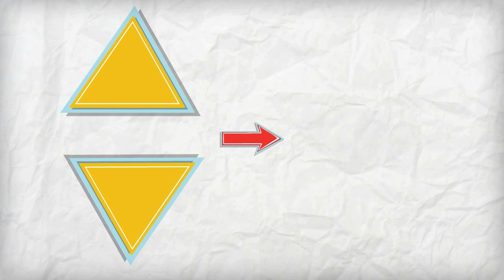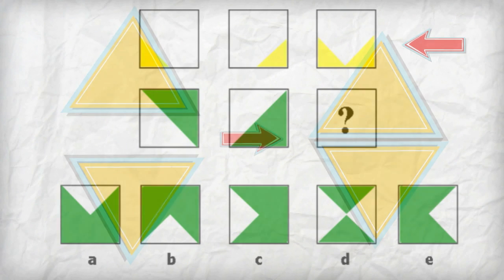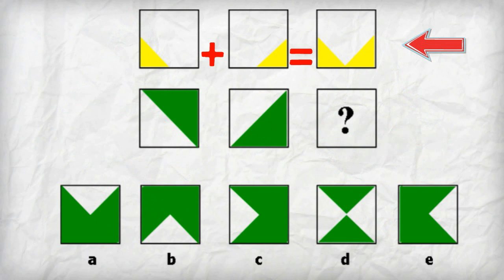To solve spatial visualization exercises, the child must figure out what two or more designs would look like if they were combined. Look at the top row. The yellow triangles in the first two boxes are simply merged together to make the shape in the third box.